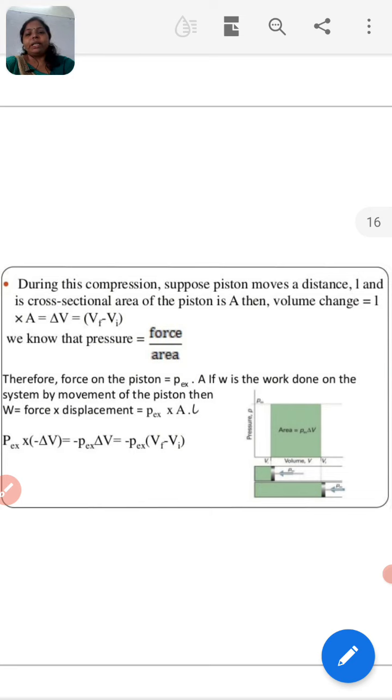The negative sign of the expression is required to obtain a conventional sign for w, which will be positive. It indicates that in case of compression, work is done on the system. Here, v_f minus v_i will be negative and negative multiplied by negative will be positive.